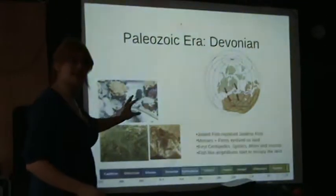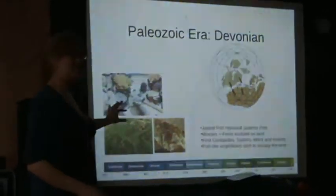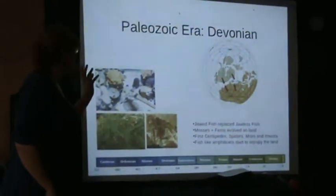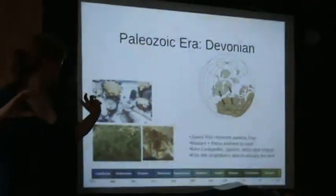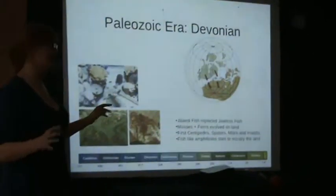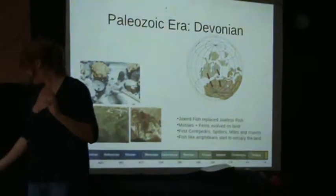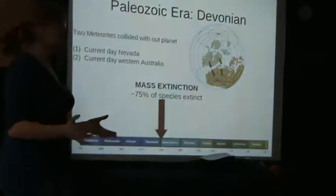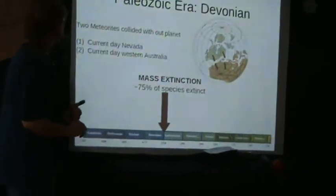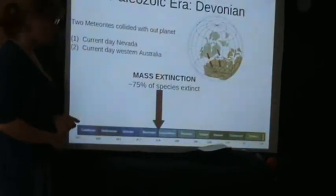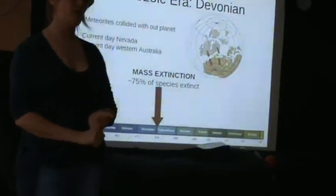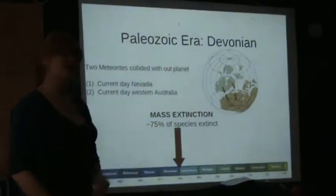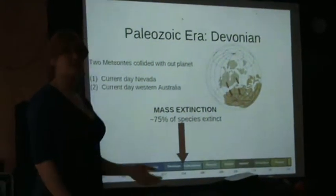The images here depict the kind of species that would have been on the planet at that time. Gondwana and the green continent started to move more northward during this period. At the end of the Devonian, we saw another mass extinction event — two meteoroids collided with our planet, one in current-day Nevada and another in Western Australia. This created another mass extinction event where 75% of the species on our planet were wiped out.